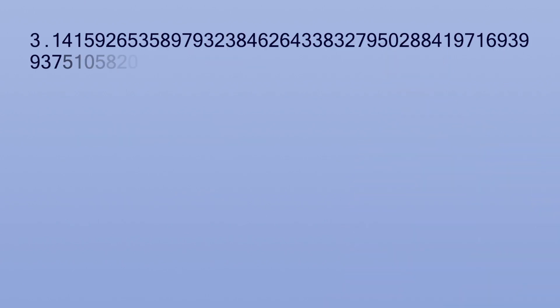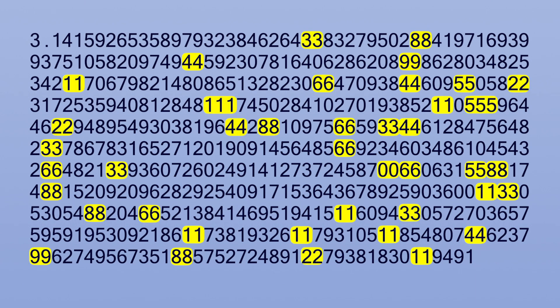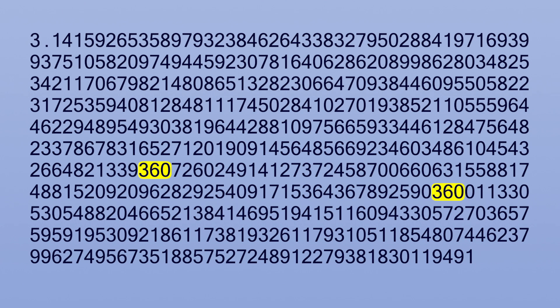To see that, let's take a look at the first 500 digits of pi. There are many places where there are two or more of the same digit next to each other. And here's the pattern 360, and then a little further along we have 360 again. And look at this. Here we have the digits 209 followed immediately by 209.